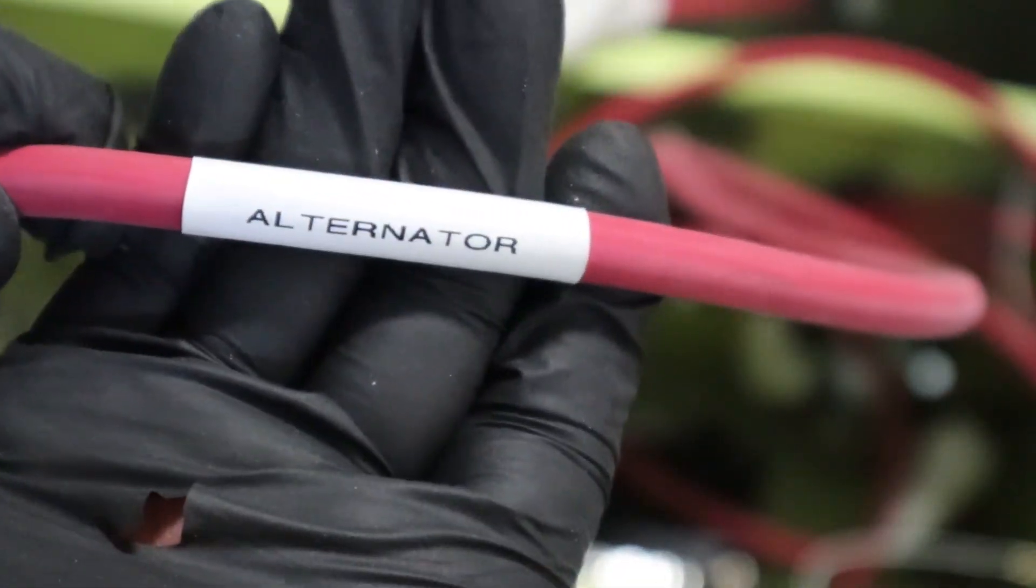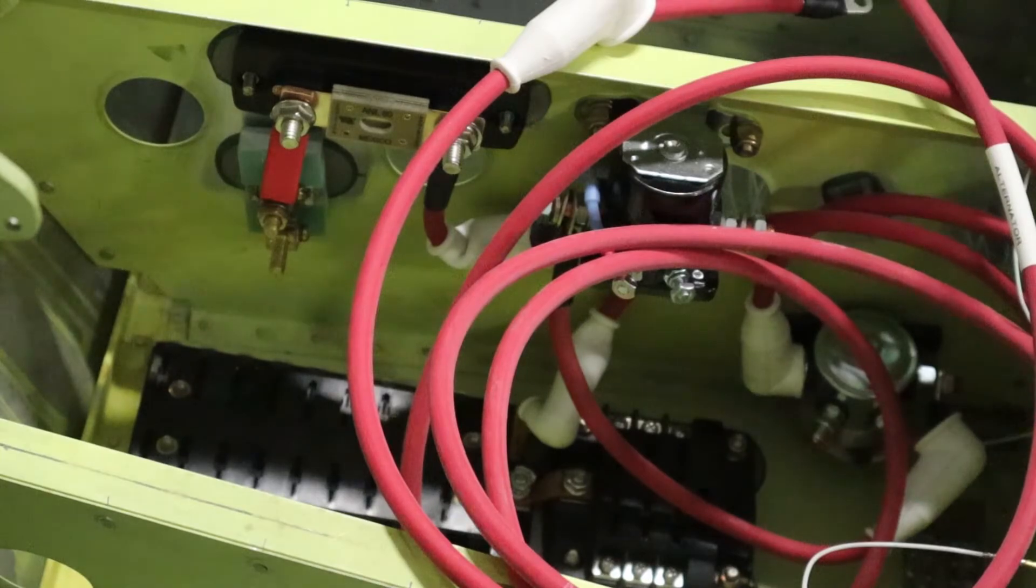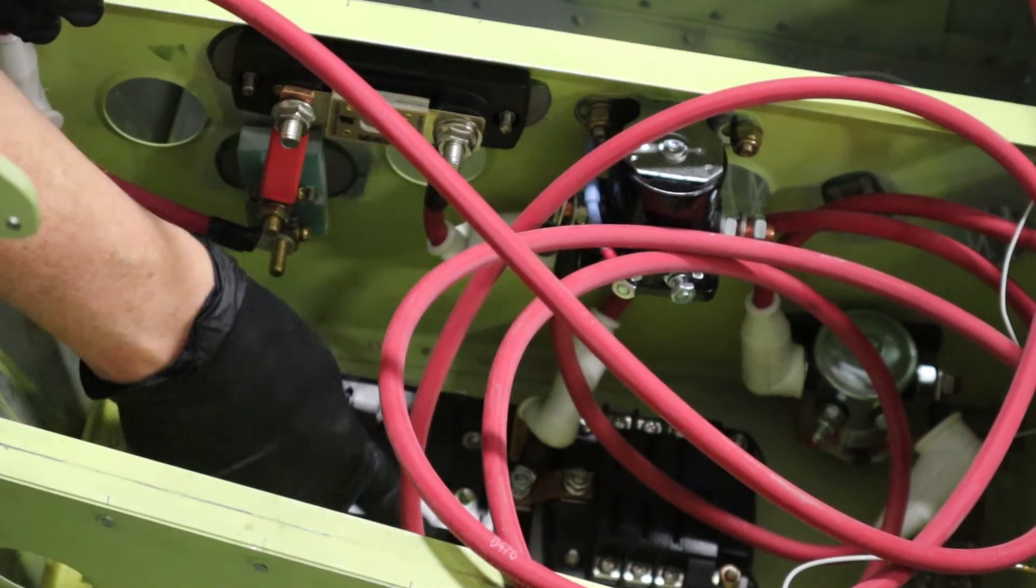And then from there, we're going to go all the way to the alternator. So we'll make this one long enough later, such that after the engine installation, it can reach the alternator. And that connects to the bottom of the shunt.